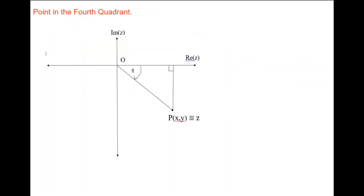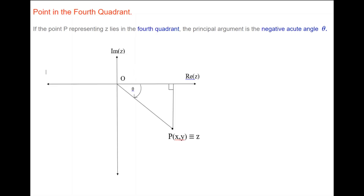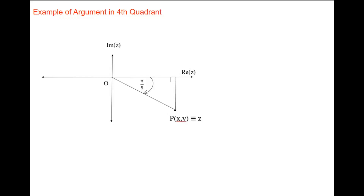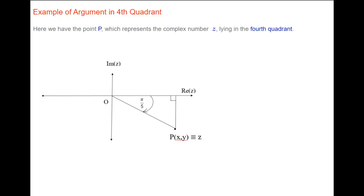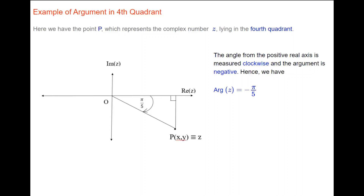If point P lies in the fourth quadrant, the principal argument is the negative acute angle, so the argument of Z would be minus theta. As an example, suppose point P lies in the fourth quadrant and the angle between the positive real axis and interval OP is π/5. Because point P is in the fourth quadrant the argument is negative, so the argument of Z is minus π/5.